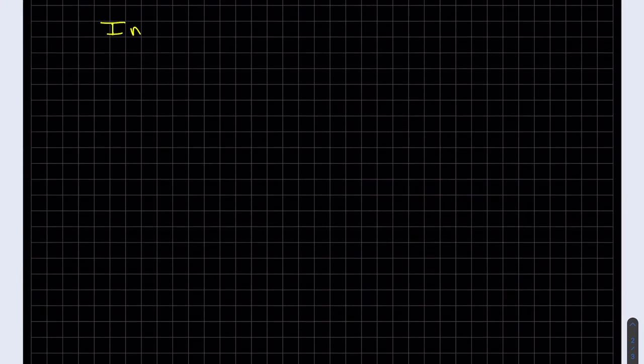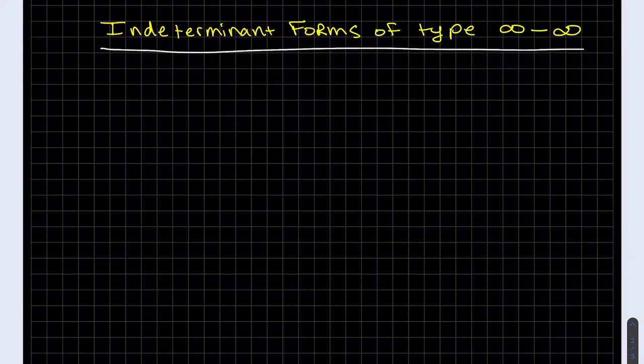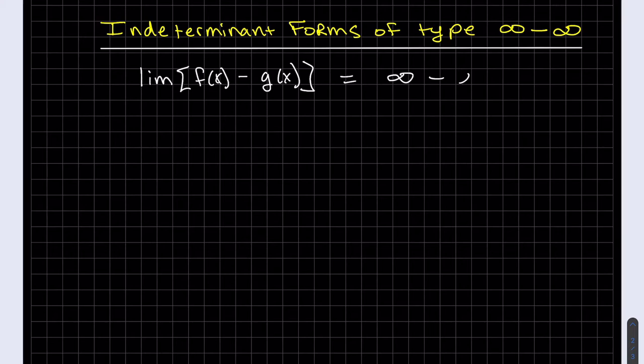The next type of indeterminate form. If we have the limit of two functions, and you plug in that limit and get infinity minus infinity, what we know here is the limit of each one does not exist, so therefore it cannot be distributed. This is indeterminate. If each of these limits do not exist, you cannot use the distributive rule like that. That was a condition of distributing the limit.